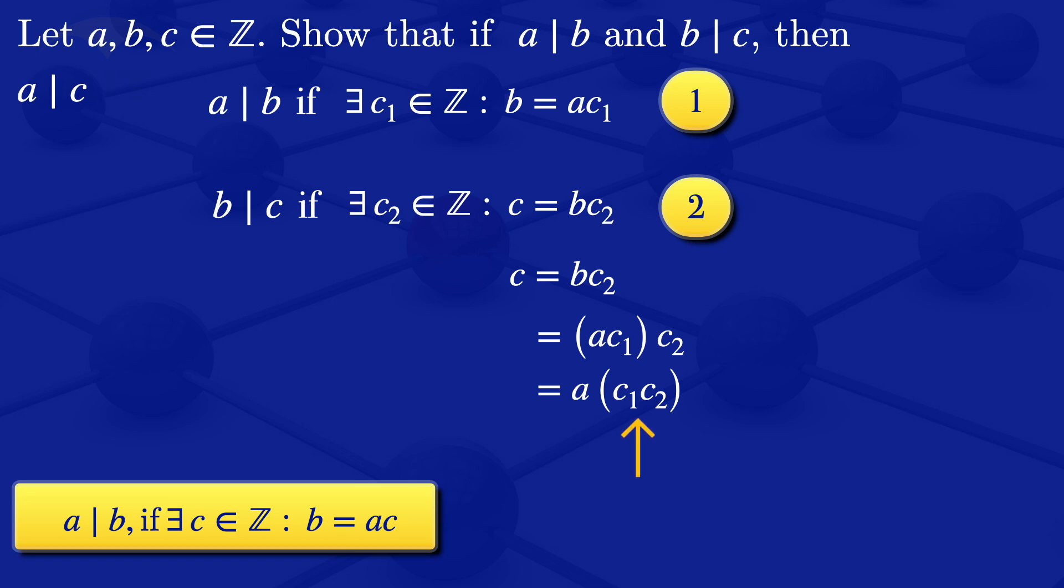On this part here, C1 times C2, these are just integers. So when we multiply two integers we get another integer. Let's call that integer C3.